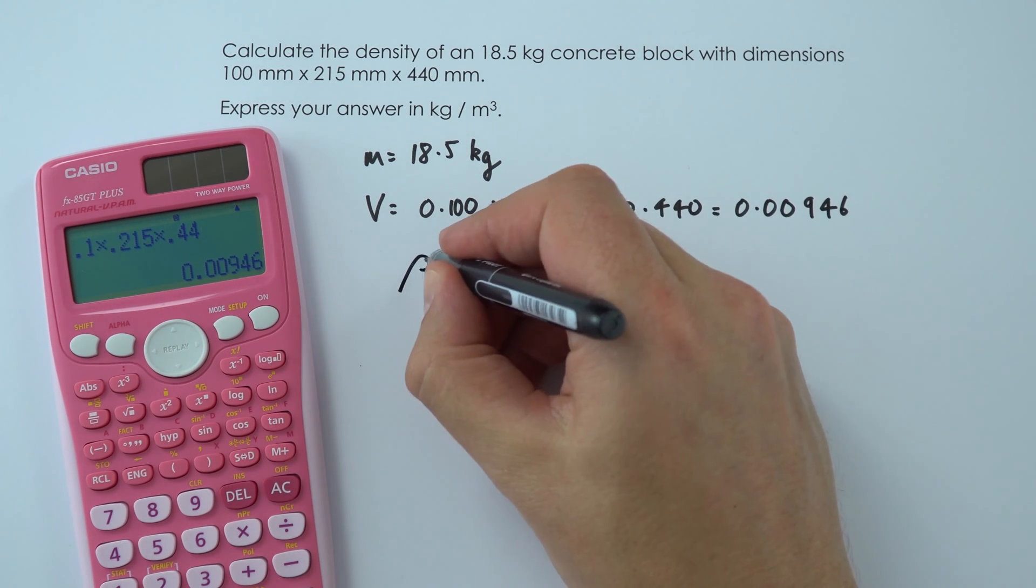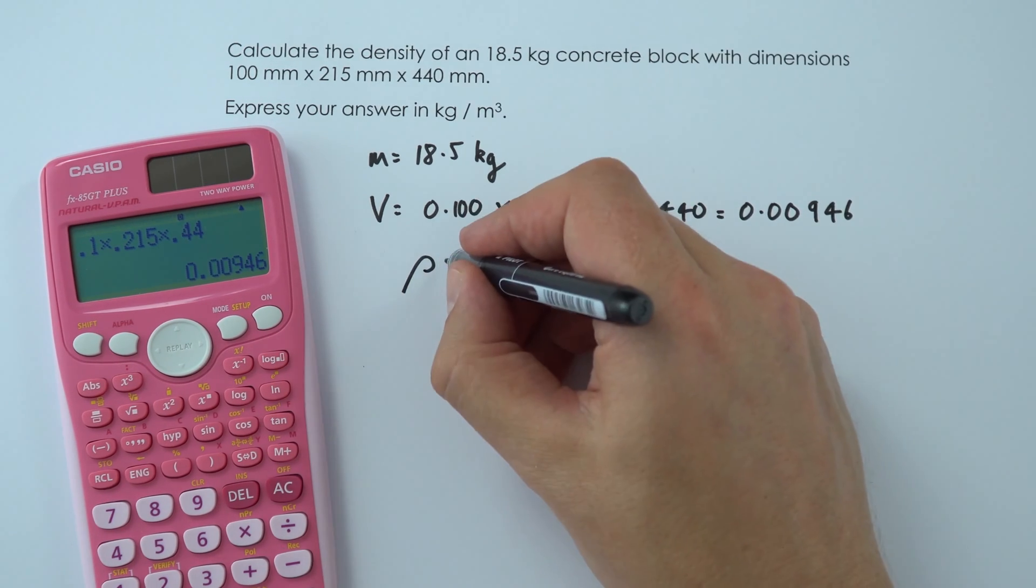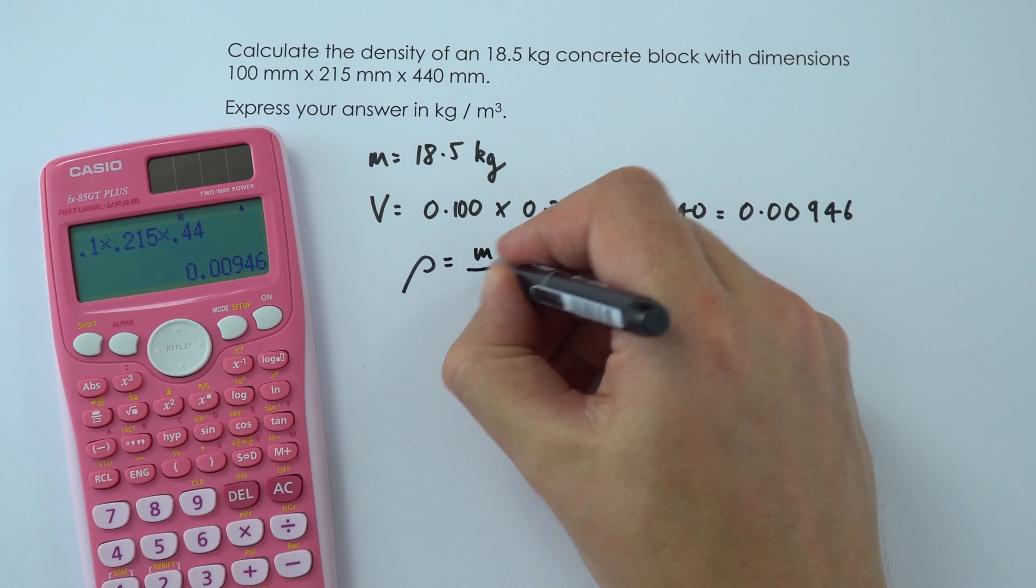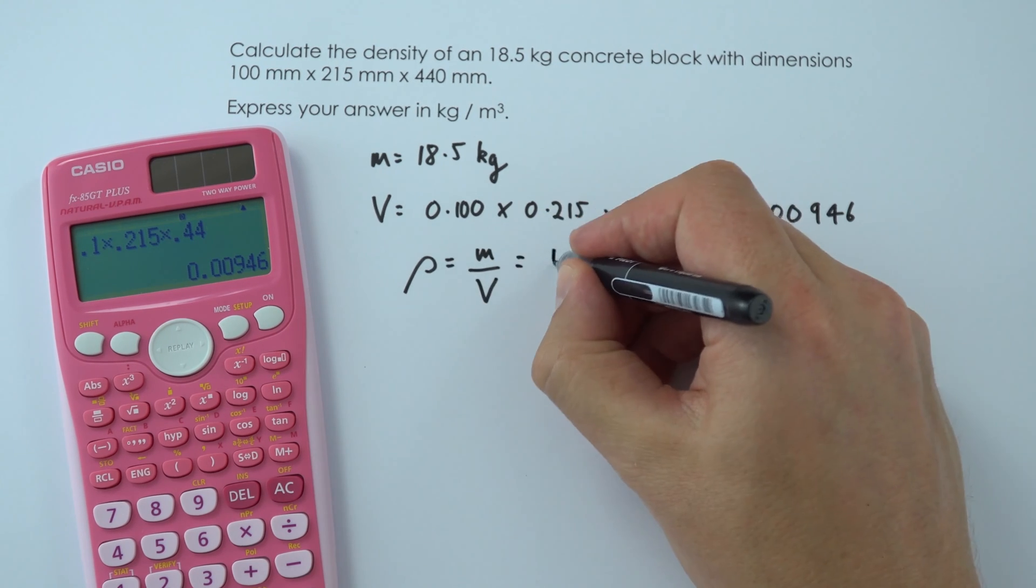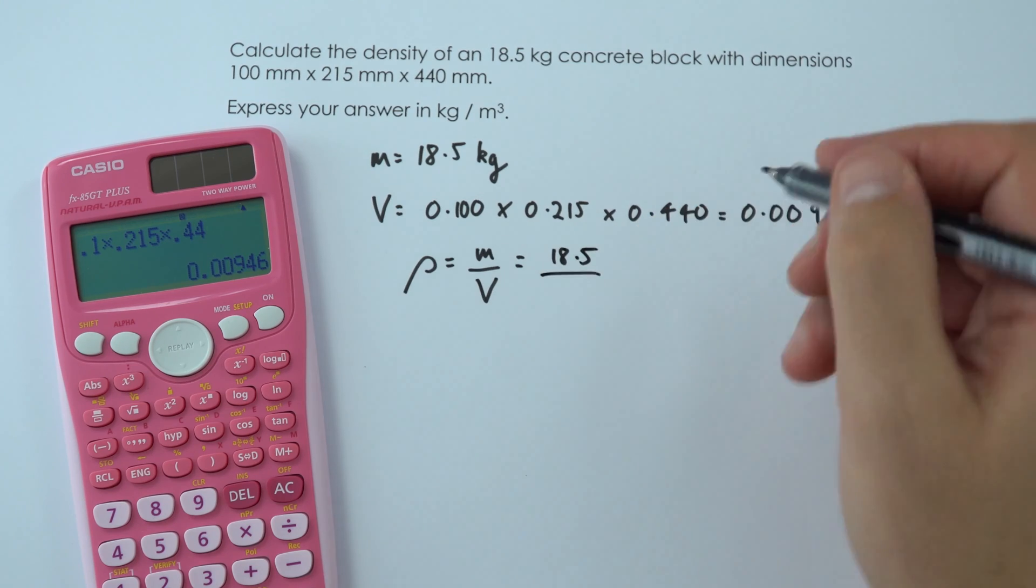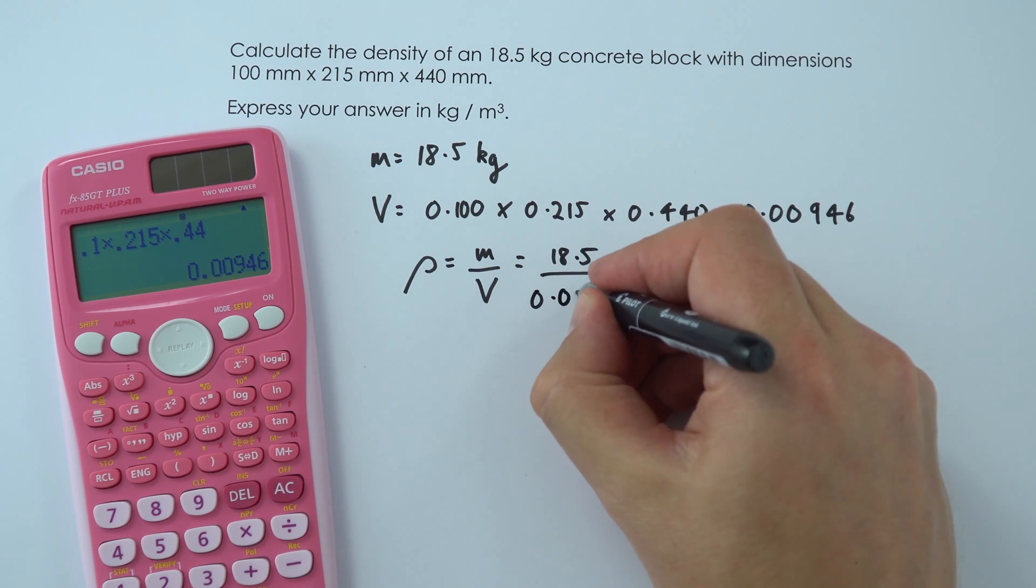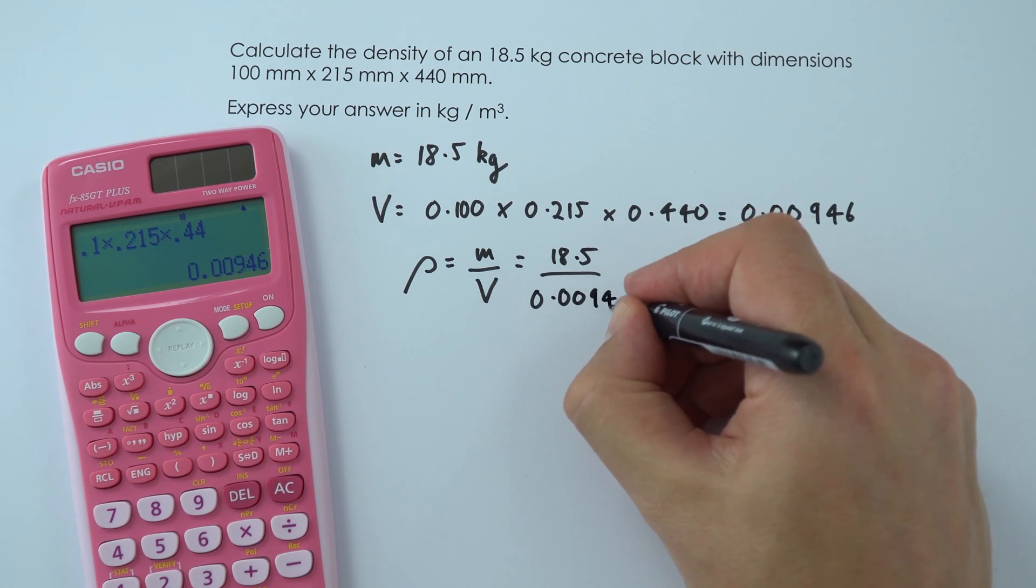So to work out the density, rho, this is our symbol we use for density, that's equal to the mass of the block divided by the volume, so that's just equal to 18.5 divided by this number up here, 0.00946.